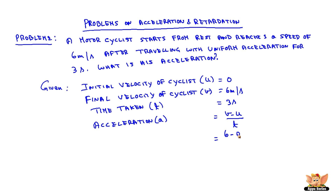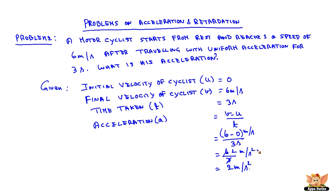Now the acceleration is equal to v minus u by t. In this case, 6 minus 0 by 3, which is 6 by 3, which is 2 meters per second square. Let us put the dimensions so that we will not forget — meters per second divided by second, so meters per second square. Hence the acceleration of the motorcyclist is 2 meters per second square.